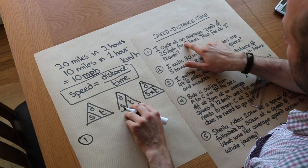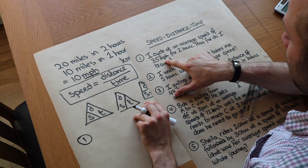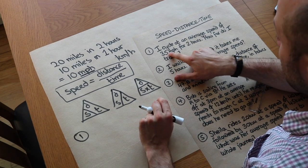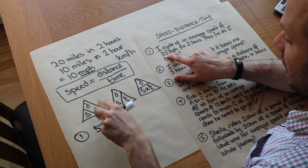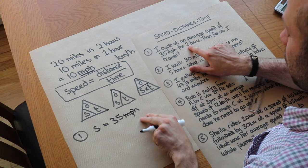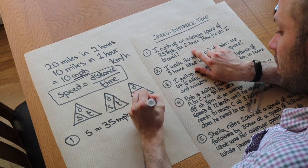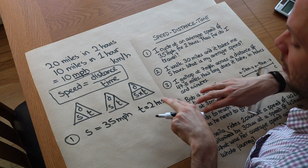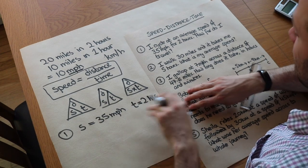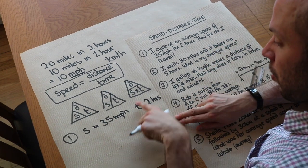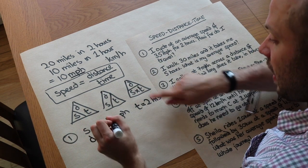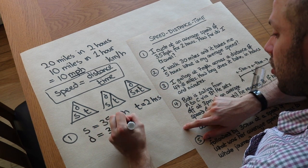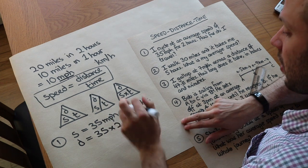Let's do question one. I cycle at an average speed of 35 miles per hour for two hours. How far do I travel? So let's write the information we've got. We've got the speed, S, which is 35 miles per hour. Then I've got the time, T, which is two hours. These units are consistent with each other because it's per hour and you've got hours here, so it means when I get the distance it's going to be in miles. Well, I want to work out distance, so the distance is the speed times the time. So it's the speed of 35 times the time of 2, and that gives me 70 miles.